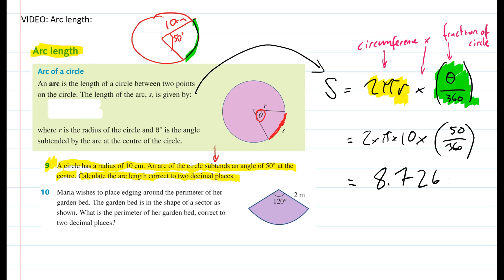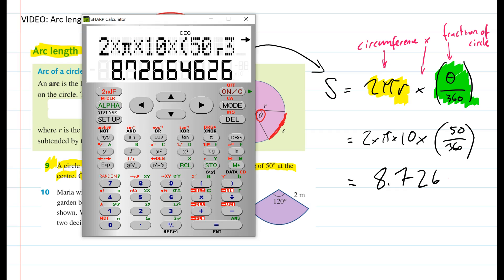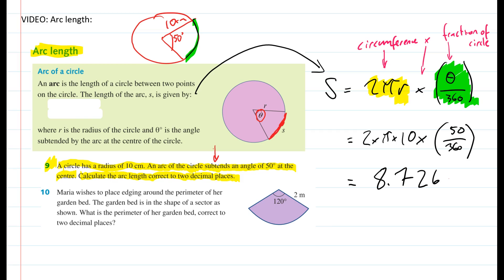Now, it had a whole heap of decimal places there. But the question only wants correct to two decimal places. So if I write it down like that, the 6 is going to round the 2 up to 3. So there's our answer.